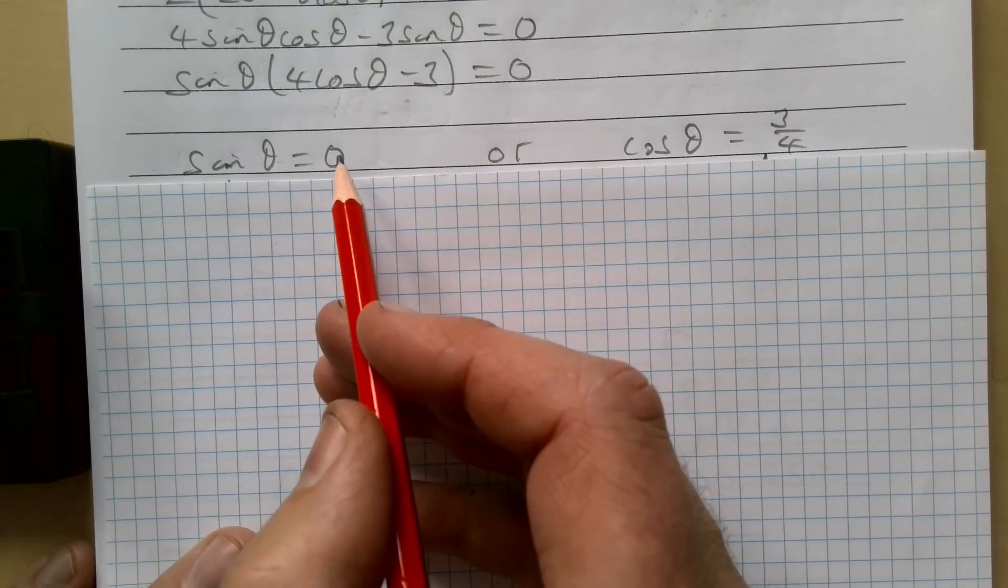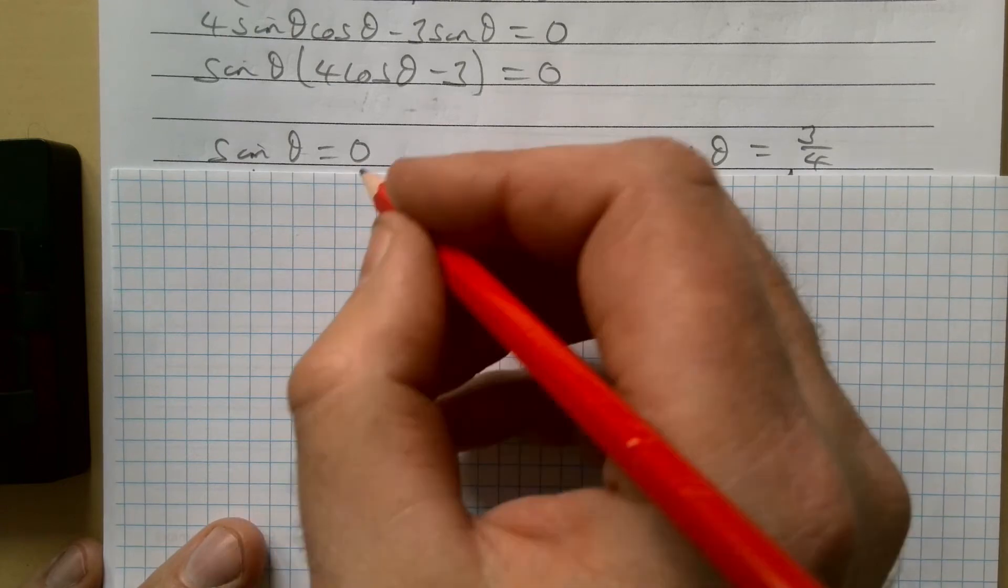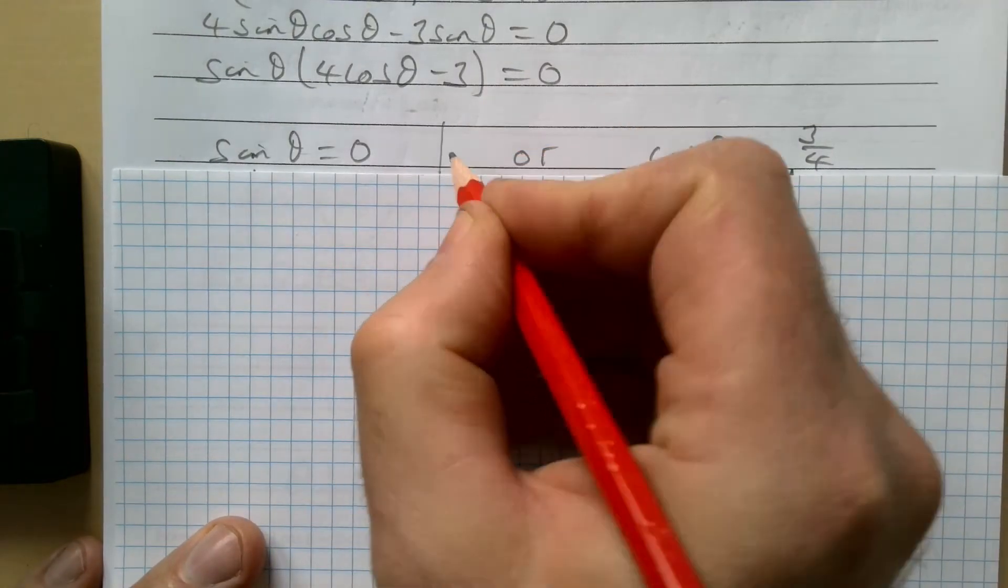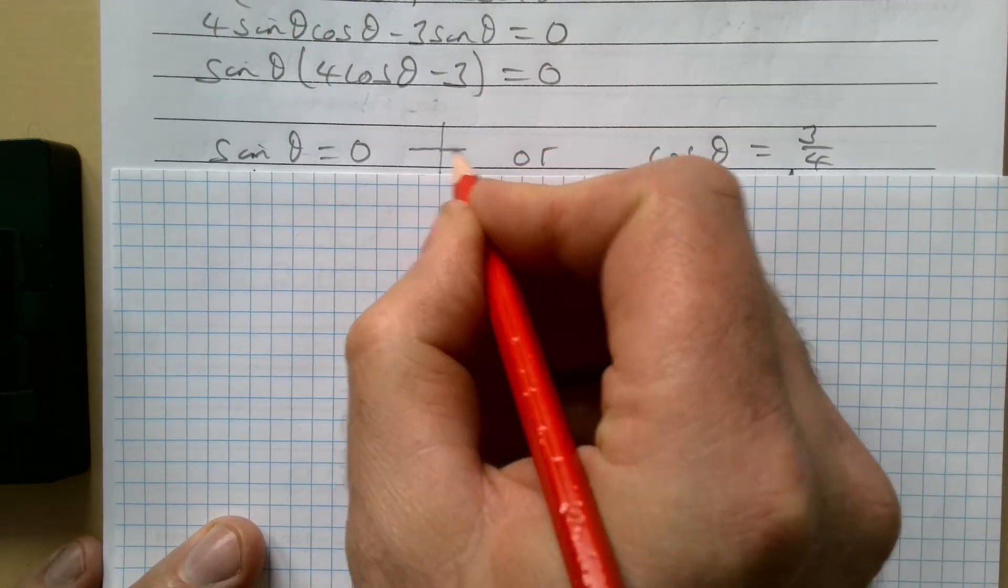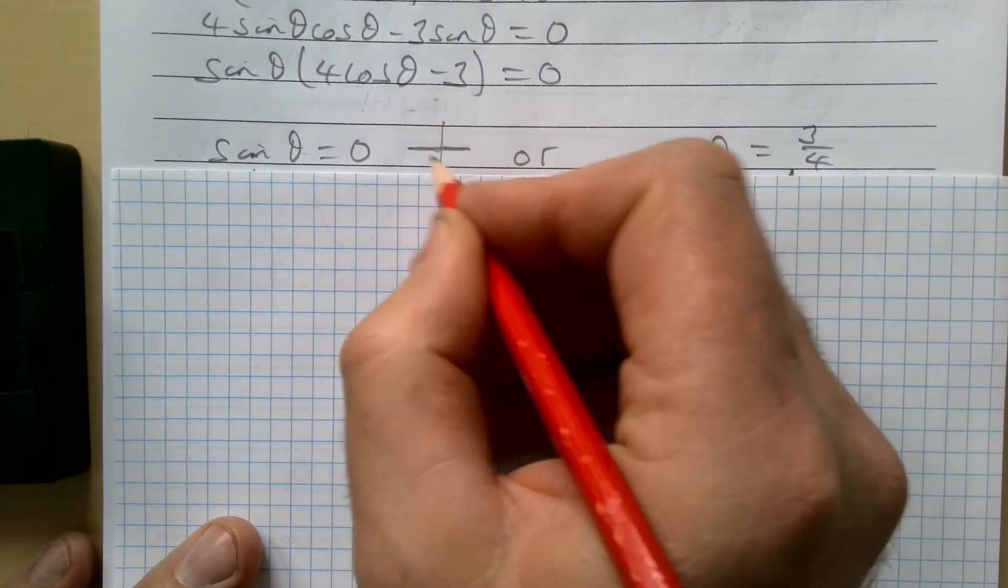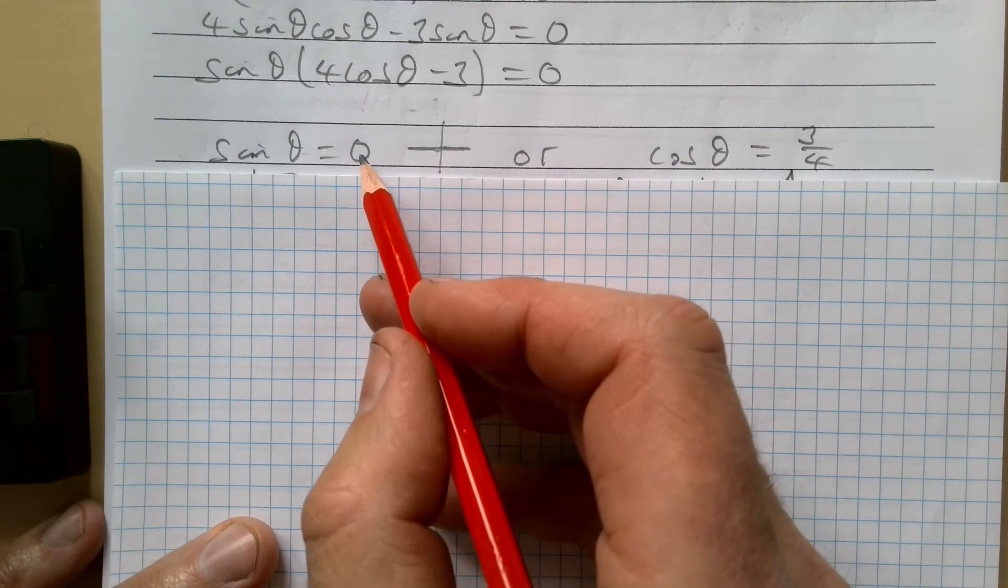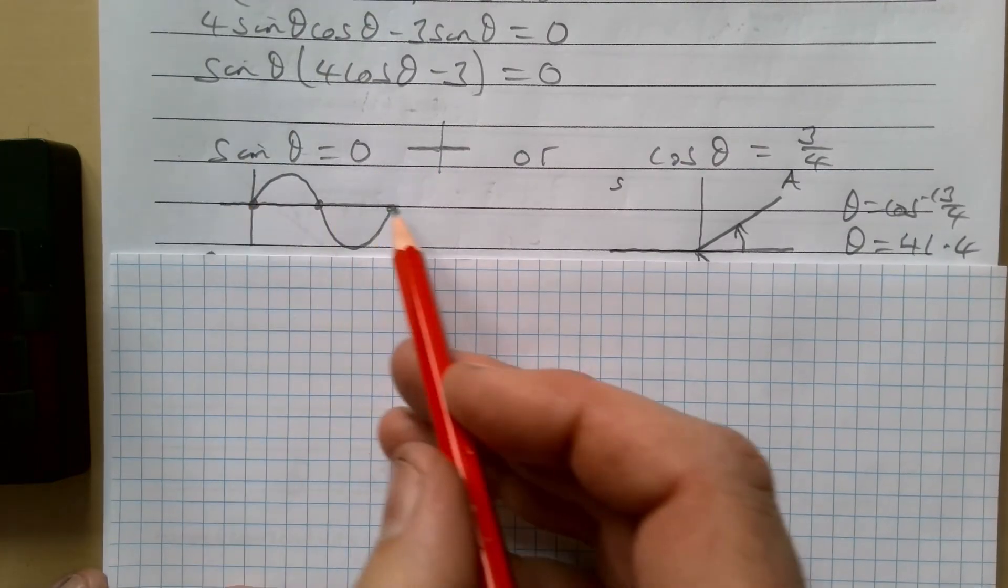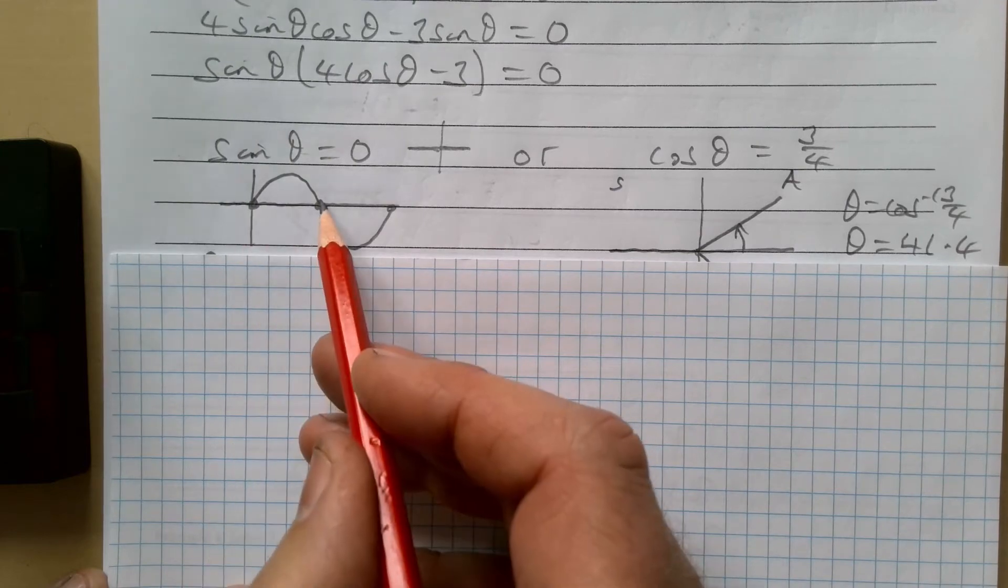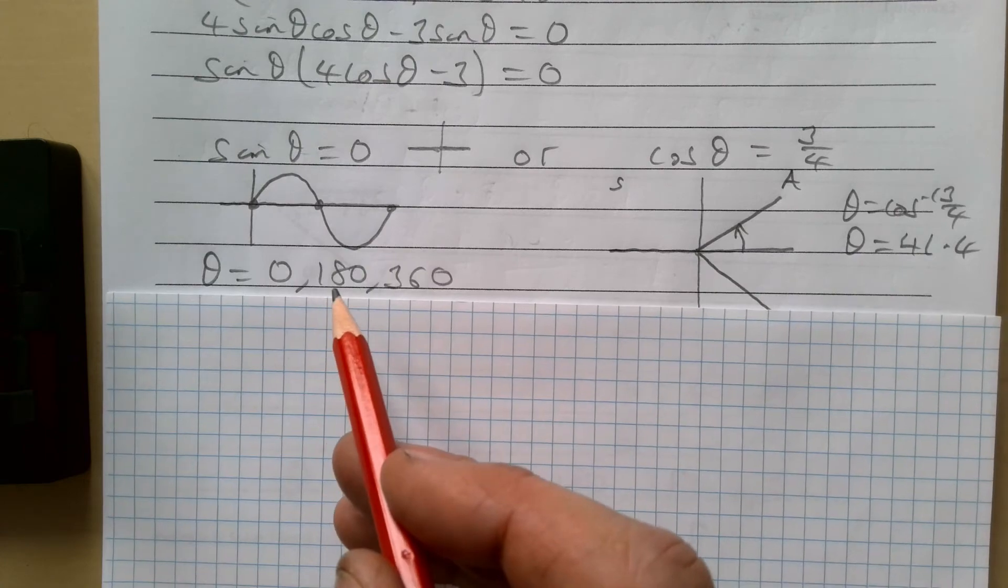Sine θ equals zero is a funny one, and anything where it equals zero you need to be very careful with the cast diagram. You could of course draw it and your zero is here and then here and here, so it's actually three and you might just miss one of those solutions. I always tend to think whenever it's zero you're much better just looking at the graph. So I've drawn a quick sine graph here of zero, 180, and 360 are the three points where it's zero. So those are my three answers.